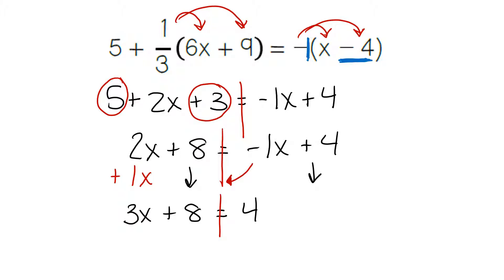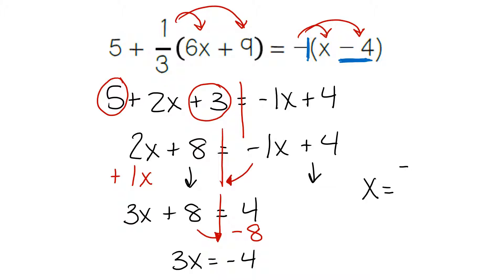Still combining like terms: 8 is on the left, 4 is on the right. So we move it over — we do the opposite of plus 8, which is a minus 8. 3x equals 4 minus 8, which is negative 4. And our last step is to divide: negative 4 divided by 3 gives us a long decimal. If you ever get a long decimal, just turn it into a fraction — you would get negative 4 over 3.